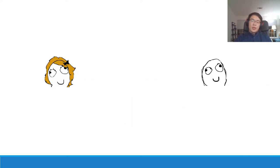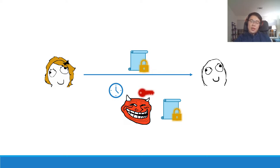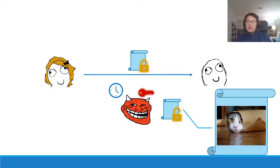Similarly, consider this scenario: Alice sends an encrypted document to Bob, and Eve makes a copy. But when Eve interrogates Bob for the key, Bob is able to provide a fake private key which nevertheless causes the ciphertext to decrypt — but this time to a fake message, say a cute picture of a cat instead of the super secret message. Eve has no way of telling whether Bob is providing the actual private key or a fake one.